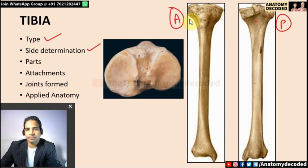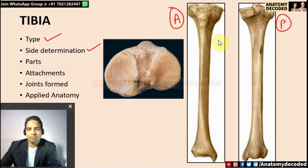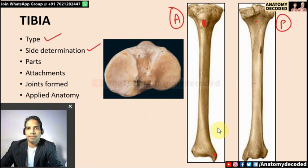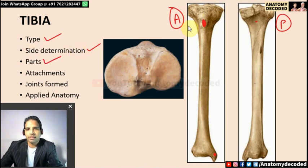For side determination of tibia: the condyles are on the superior aspect; the tibial tuberosity is on the anterior aspect; and the medial malleolus should be facing on the medial aspect. Justifying these three dimensions allows easy side determination of the tibia.